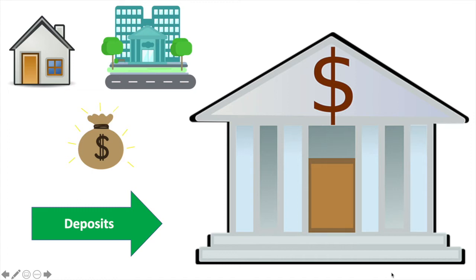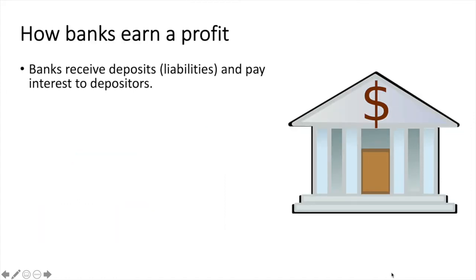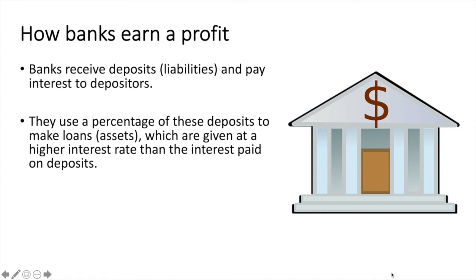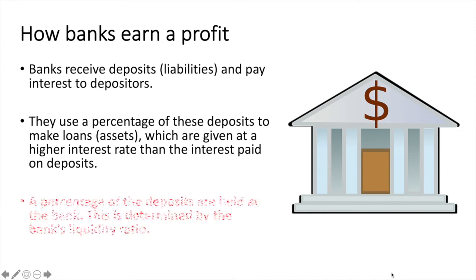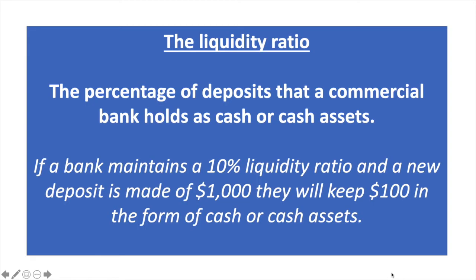Banks receive deposits or liabilities and pay interest to depositors. They use a percentage of these deposits to make loans, which are assets, given at a higher interest rate than the interest paid on deposits. A percentage of the deposits are held at the bank — this is determined by the bank's liquidity ratio. The liquidity ratio is the percentage of deposits that a commercial bank holds as cash or cash assets.